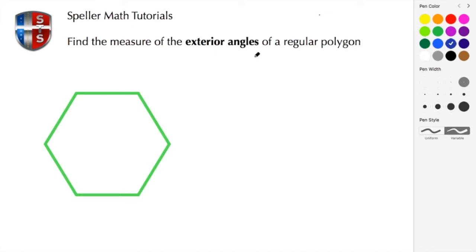Here we need to find the measure of the exterior angles of a regular polygon. This regular polygon here is a hexagon where we have six sides. Each side is congruent. We know that because it's regular and we also know that each of these interior angles are also congruent.